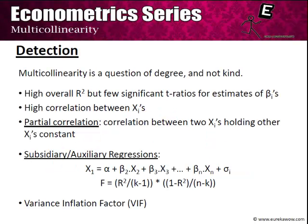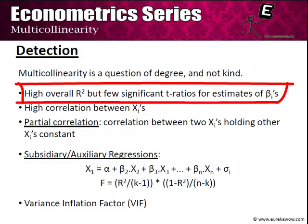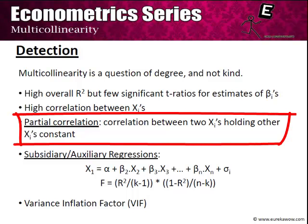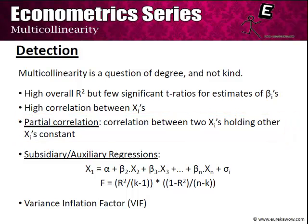To detect multicollinearity, the first rule of thumb is a high overall R-squared but few significant t-ratios for the βi estimates. Second is a high pairwise correlation between regressors. However, this correlation might be driven by both variables' relationship with a third variable Z, so we use partial correlation — the correlation between two regressors holding other regressors constant. The best method is running an auxiliary regression.